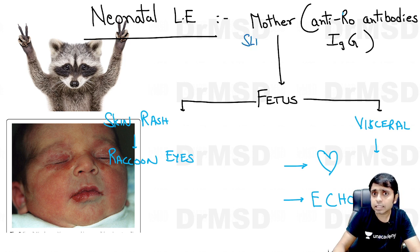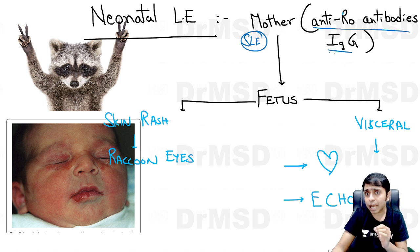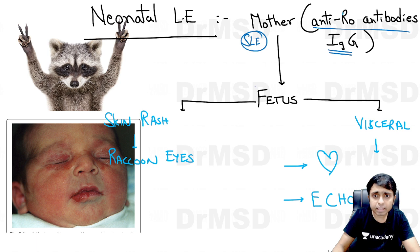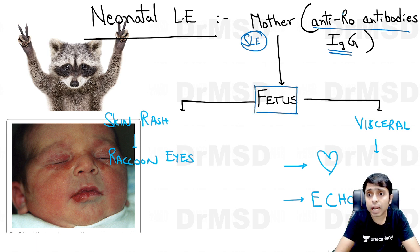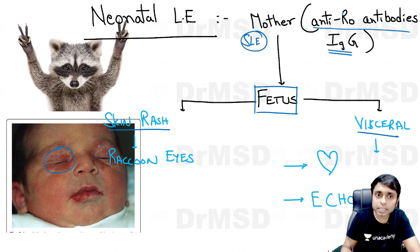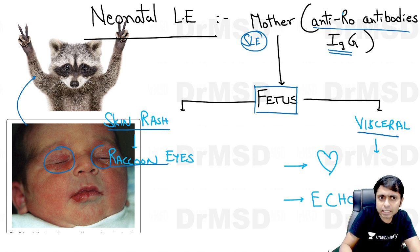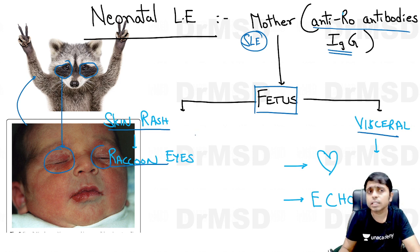About neonatal lupus erythematosus: if a mother has systemic lupus erythematosus with anti-Ro or anti-SSA antibodies, these IgG antibodies pass through the placenta and produce cutaneous as well as visceral manifestations in the fetus. The most common cutaneous finding is an erythematous rash seen periorbitally, called raccoon eyes, because the periorbital rash is distinct from the rest of the body — similar to a raccoon's markings.